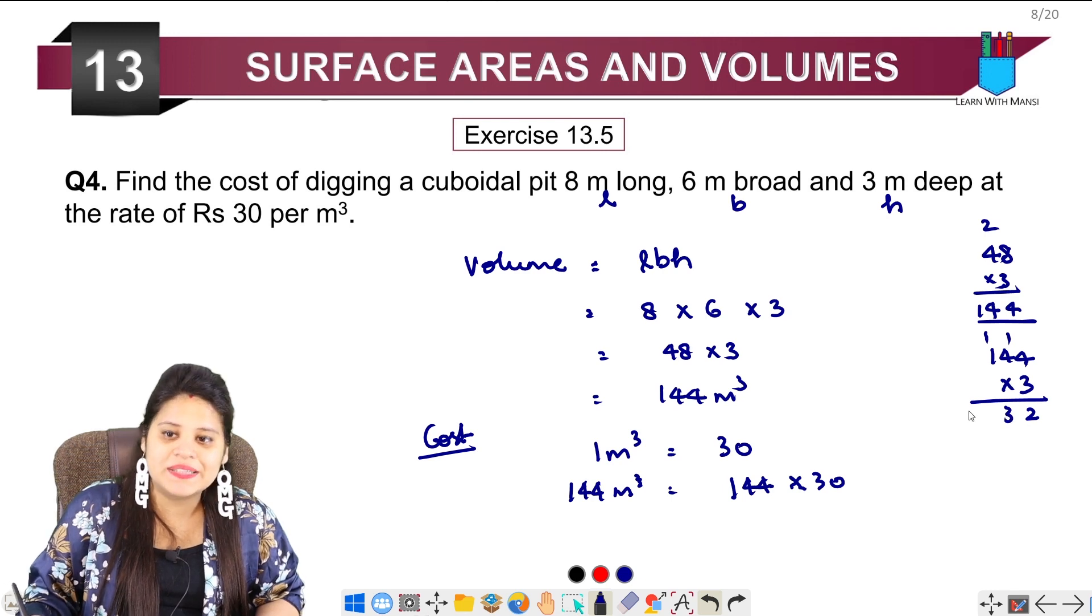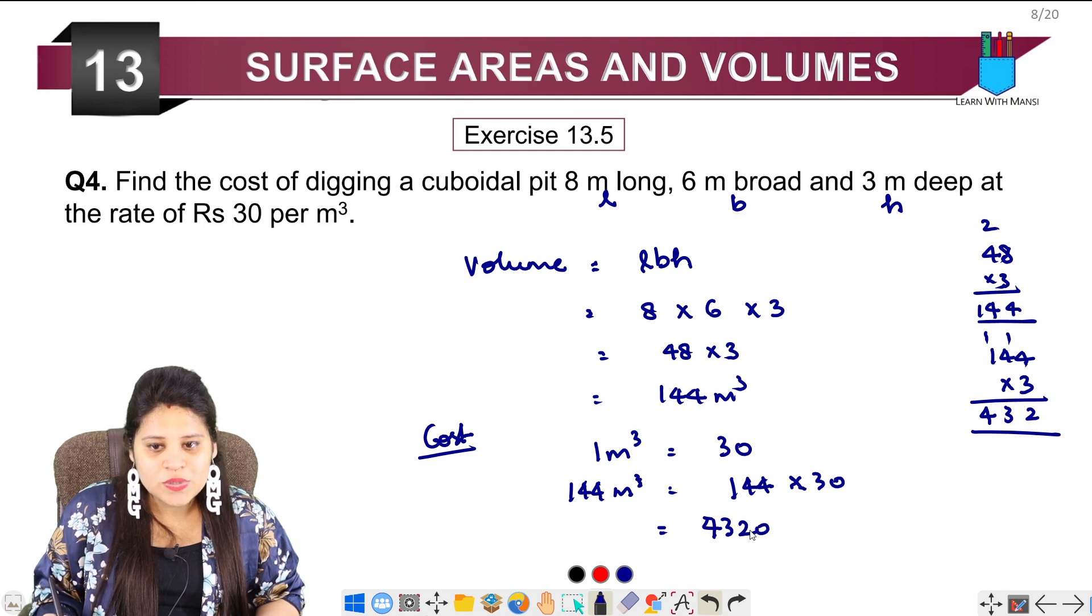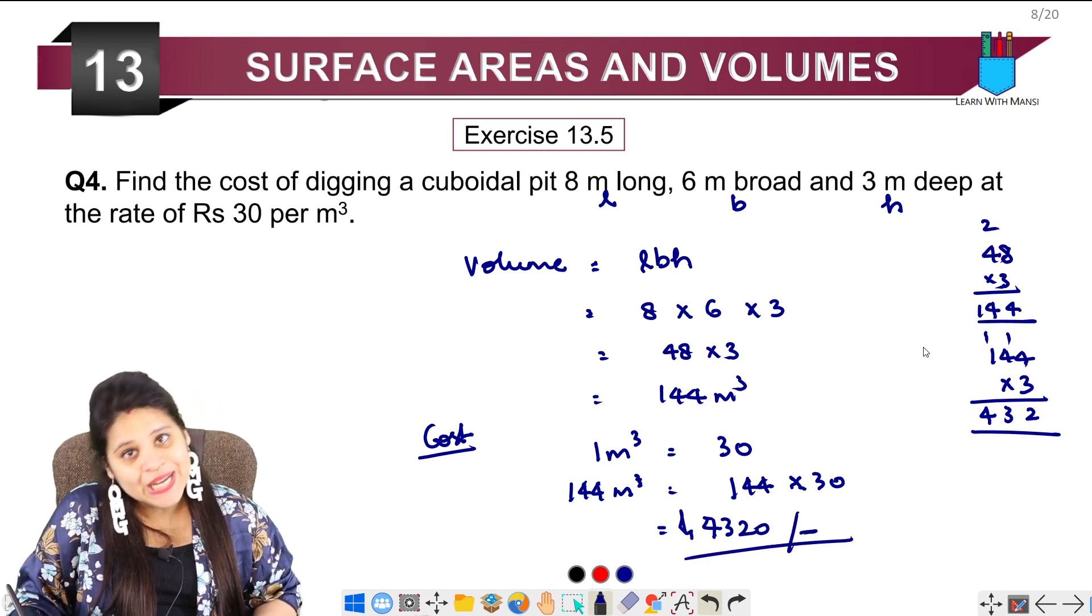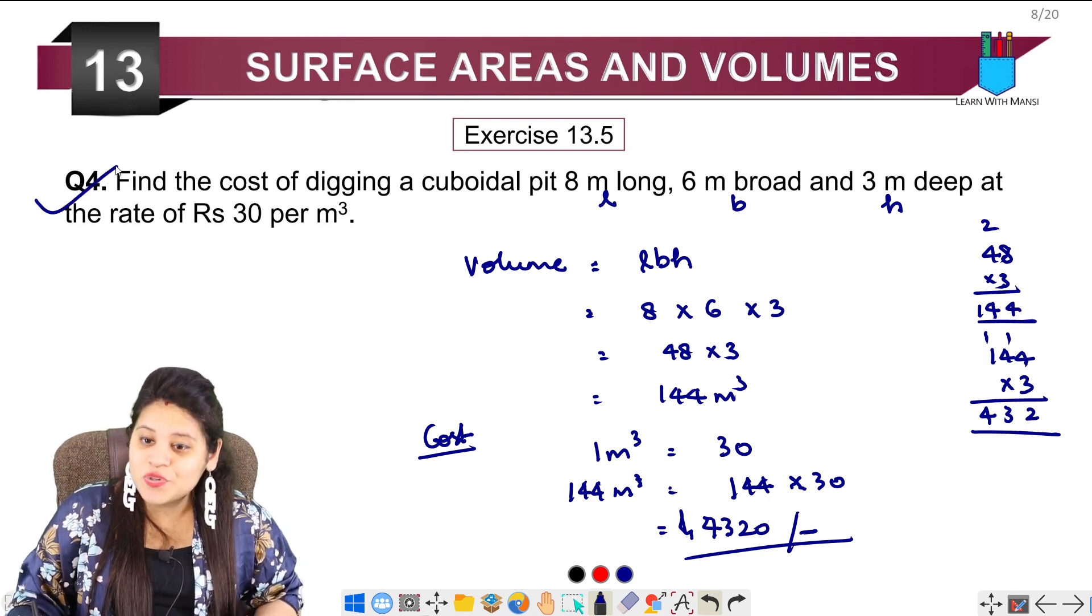So we have 4320. Rupees 4320 is our cost. This is our fourth question of exercise 13.5. Let's get to the next question in the next video.